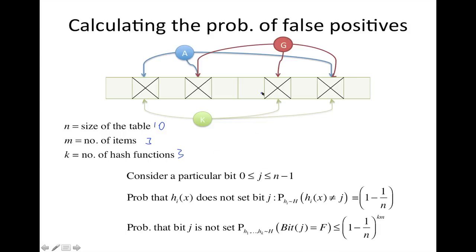So let's consider a particular place in our table, j, let's say this place, for example. And we want to say, what's the probability that the ith hash function does not set bit j. So meaning it doesn't map to j, it's not equal to j. And that's very probable, it's 1 minus 1 over n, because there's one place that would set j, and then all the other places would not.